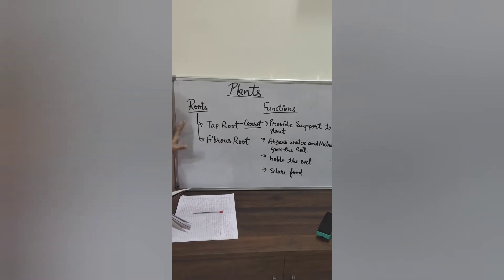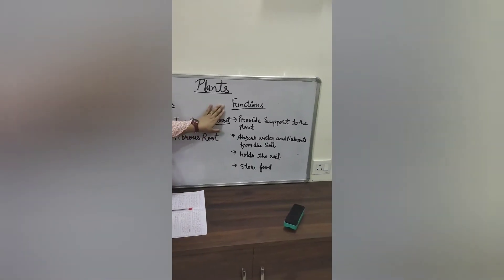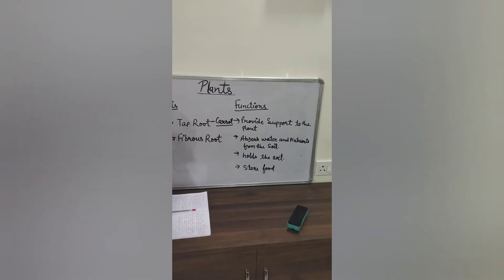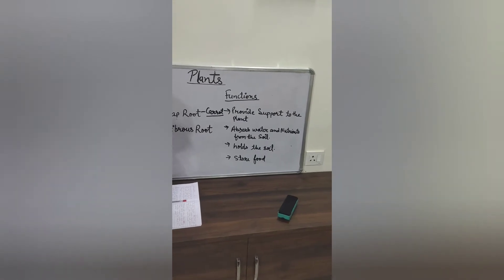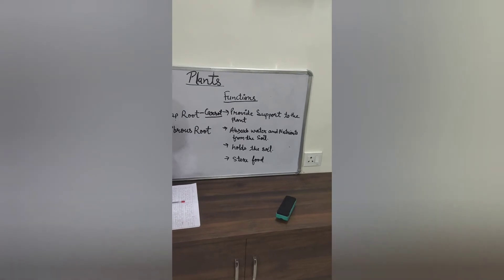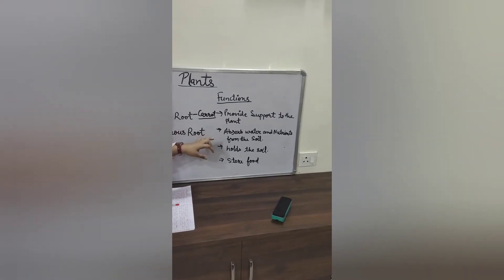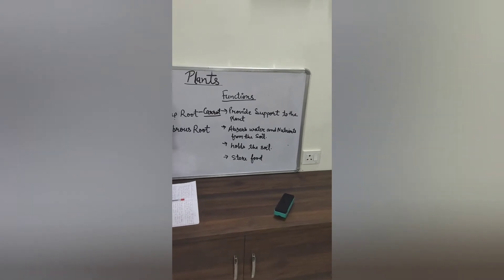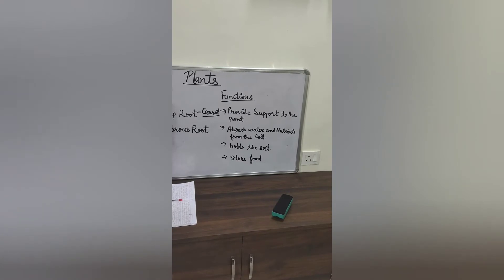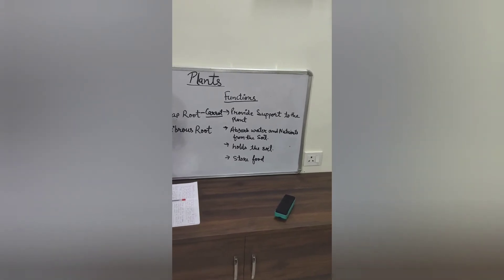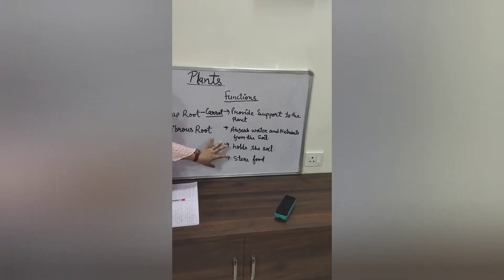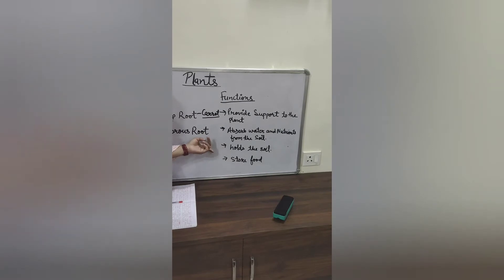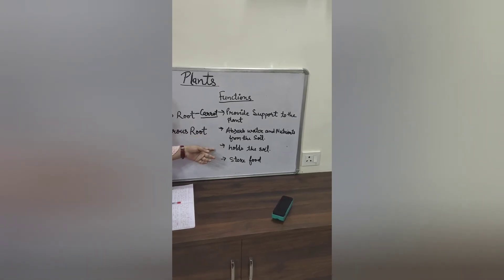Now we will discuss the functions of roots. Roots attach the plant to the ground and provide support to the plant, helping hold it firmly in the ground. Roots absorb water and nutrients from the soil — plants need water for their growth. Roots absorb water and nutrients and transport them to the stem. Roots also hold the soil in place so that it does not get washed away during heavy rains, floods, or by wind. Washing away of soil is called soil erosion.